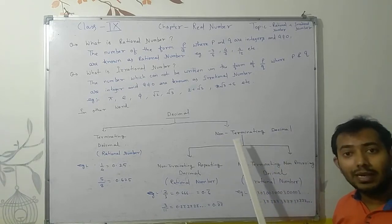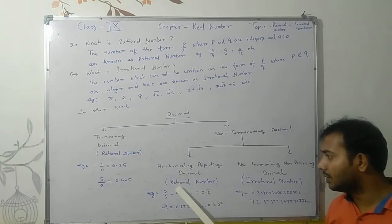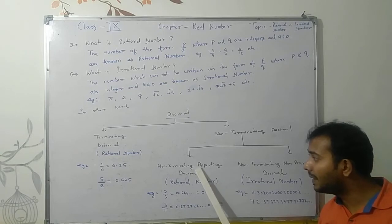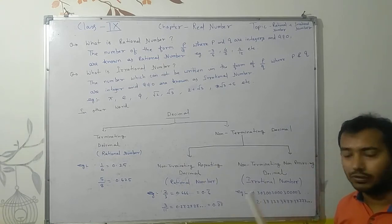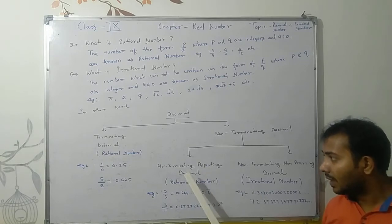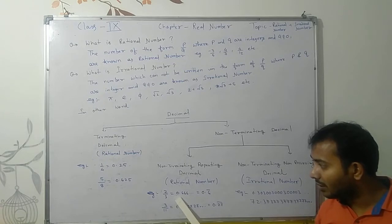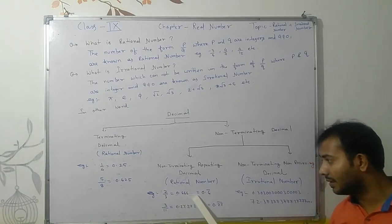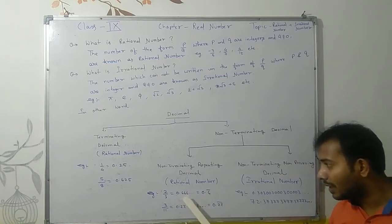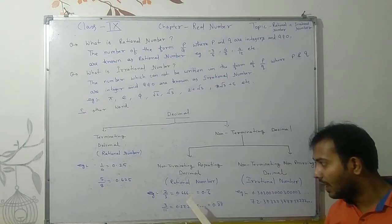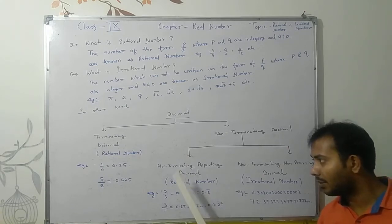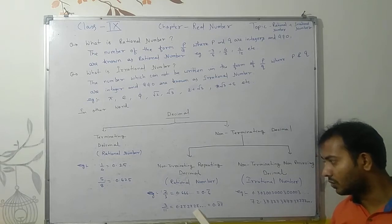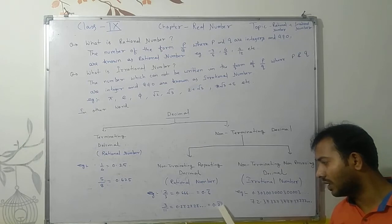Non-terminating decimals are further divided into two categories. The first is non-terminating repeating decimal — also called recurring decimal; both terms mean the same thing. For example, 2/3 = 0.666... does not terminate and keeps repeating. This can be written as 0.6̄ (0.6 bar), and this type of number is called a rational number. Similarly, 3/11 = 0.272727... can be represented as 0.2̄7̄ (0.27 bar), which is also a rational number.